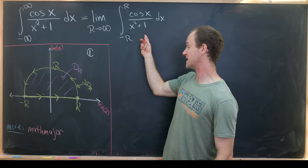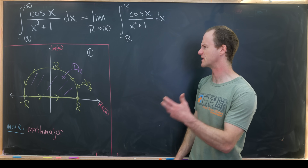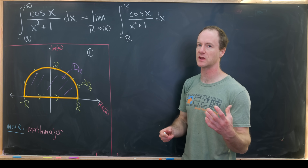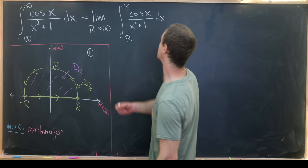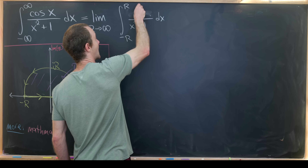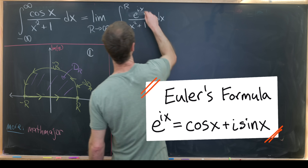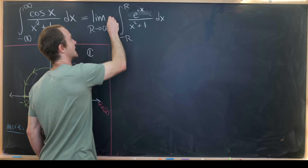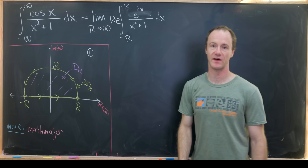Before we look at this as an integral over this closed curve, we do one more thing typical when handling rational functions combined with trig: instead of looking at cosine x, we look at e to the ix, keeping in mind that e to the ix equals cosine x plus i sine x. If we use e to the ix, we need to take the real part at the end to recover cosine x.